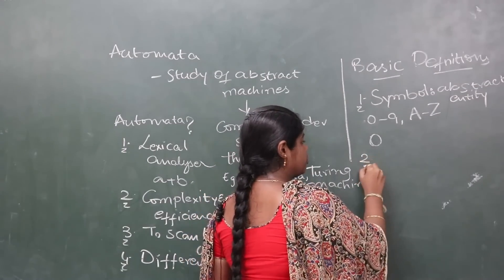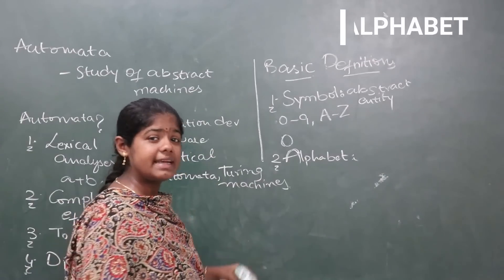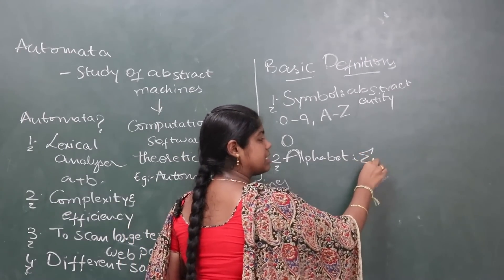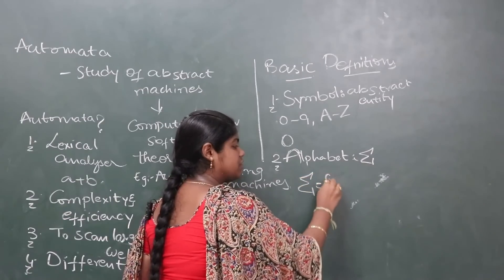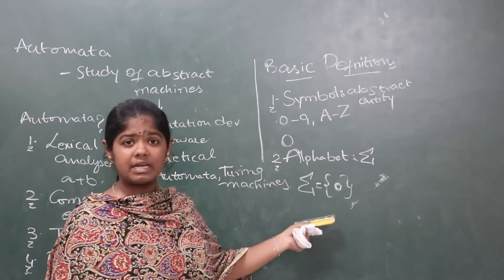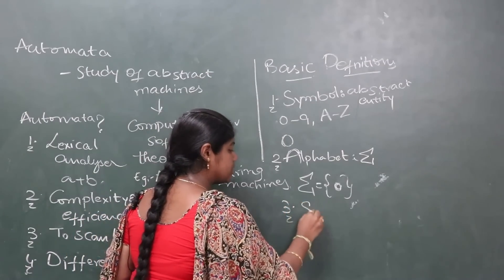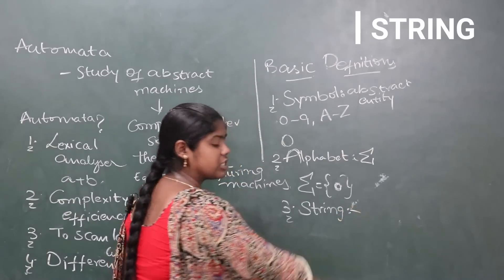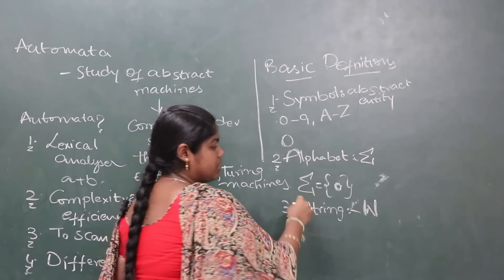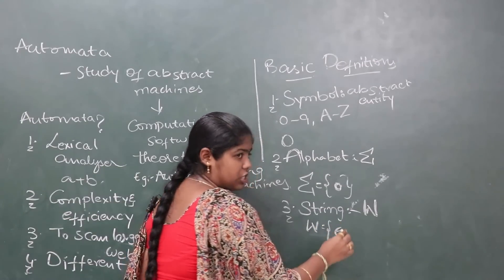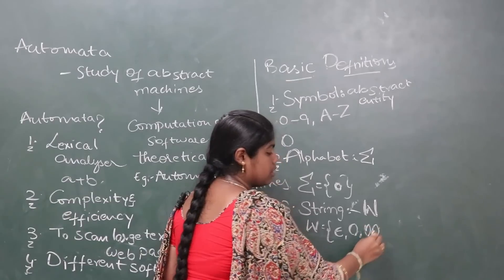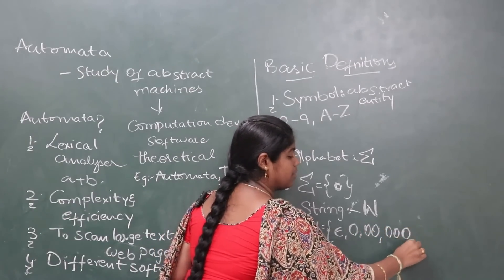The second definition is alphabet. An alphabet is represented using sigma and is considered as a set of symbols. For example, sigma equals a set containing 0. If 0 is a symbol, we can construct strings from it. From this alphabet we can form strings: the empty string epsilon, the single symbol 0, the double string 00, the triple string 000, and so on.